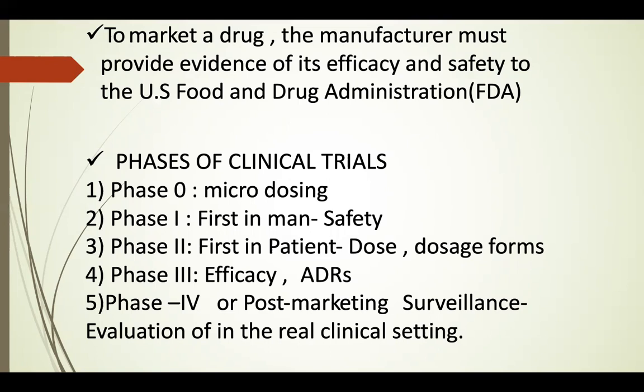The clinical trial phases are: Phase 0 Microdose, Phase 1 First-in-Man Safety, Phase 2 First-in-Patient Dose, Phase 3 Efficacy and Adverse Reaction Report, and Phase 4 Post-Marketing Surveillance — the evaluation of the drug in a real clinical setting. When testing is done in patients and marketing is done worldwide, post-marketing surveillance is conducted. If a hazardous effect is found, the drug will be closed.